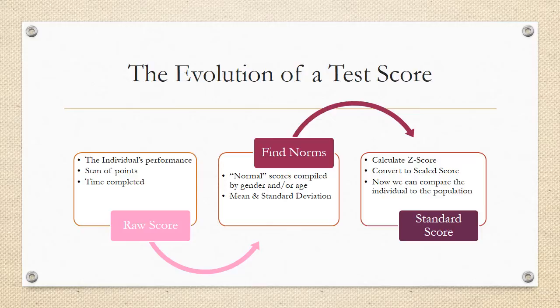This should help you understand the process. Let's look at the evolution of a test score. Again, we start with the raw score. This is the individual's performance. Whether the test measures the sum of points or how fast the person completed the test, this measure only tells us how this person did on the test. It does not tell us anything else. So now we have to compare this person to other people similar to them, whether it's by gender or age or education. So we find the norms.